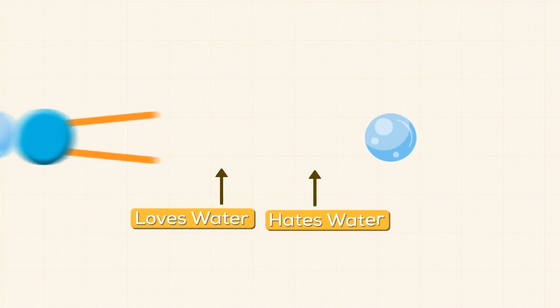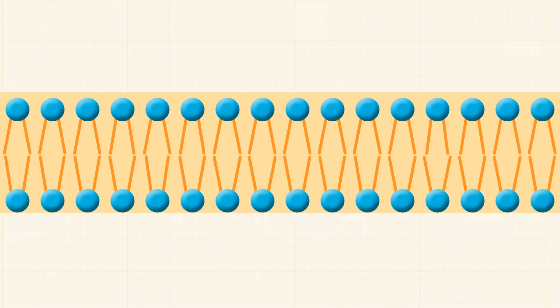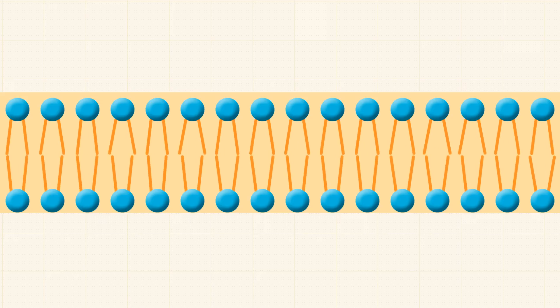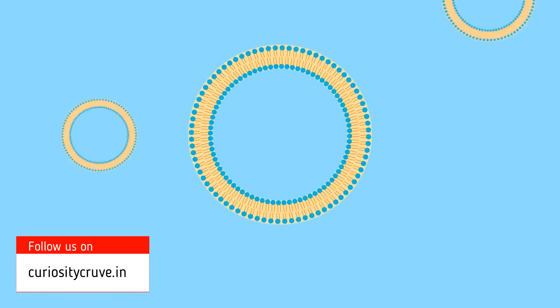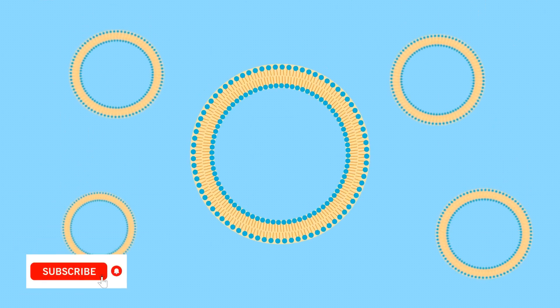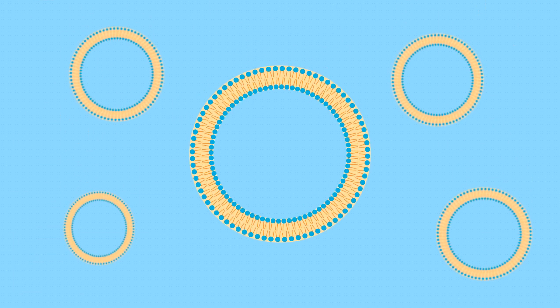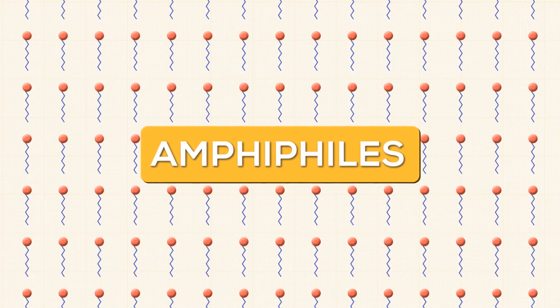Their tails hate water. There are two such bands of water-hating tails sandwiched between water-loving heads. In a water-rich environment, this maintains the virus structure.